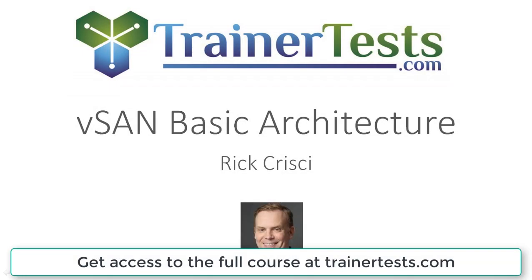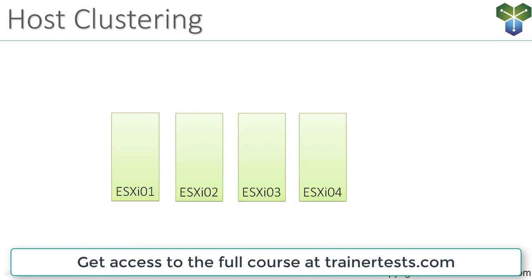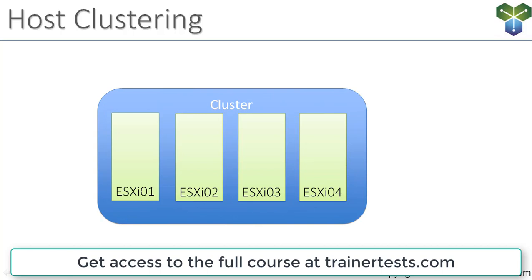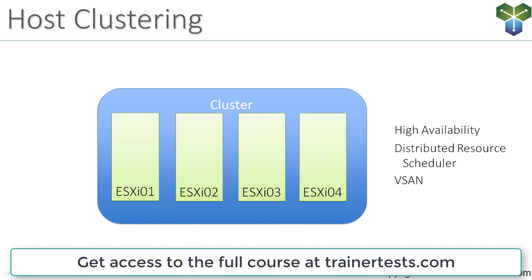In this video I'll walk you through some of the basic architecture of virtual SAN, and we'll start with the very most basic: the host cluster. A cluster is simply a logical grouping of ESXi hosts. If you want virtual machines to automatically fail over to another host if their host fails, that's high availability, and we have to create a cluster to enable it. We also create a cluster to enable DRS, which lets virtual machines automatically vMotion from host to host for load balancing. Another feature that requires a host cluster is virtual SAN, so step one of setting up vSAN is to create an ESXi host cluster.